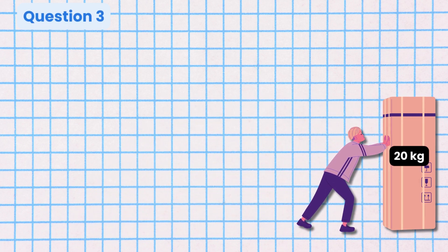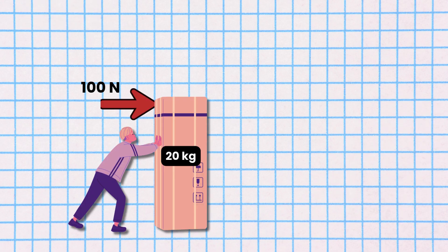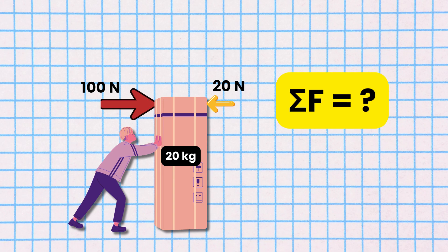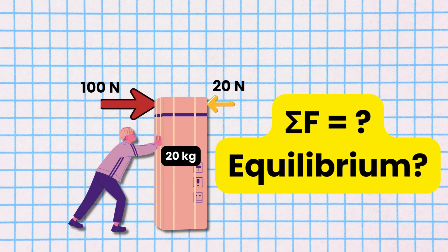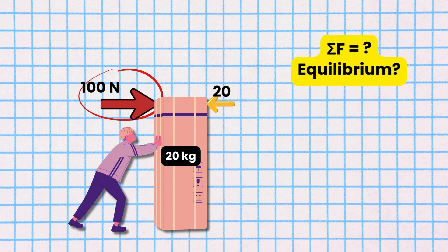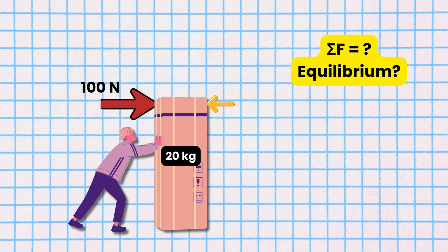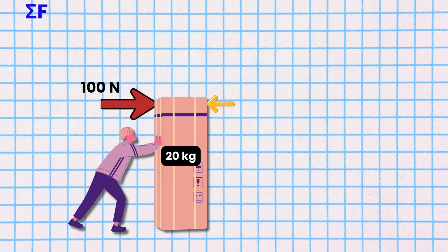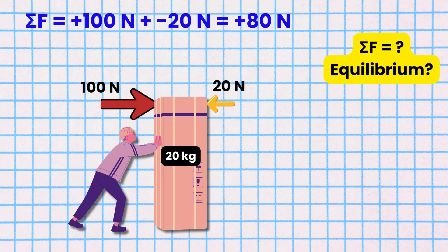Question 3: Albert pushes a carton of mass 20 kg with a force of 100 newtons. If there is a frictional force of 20 newtons acting against the motion, what is the net force on the carton? Is the carton in equilibrium? The applied force is 100 newtons in the positive direction and the friction force is 20 newtons in the negative direction. So the net force equals +80 newtons. The carton is not in equilibrium because the net force is not equal to zero newtons.